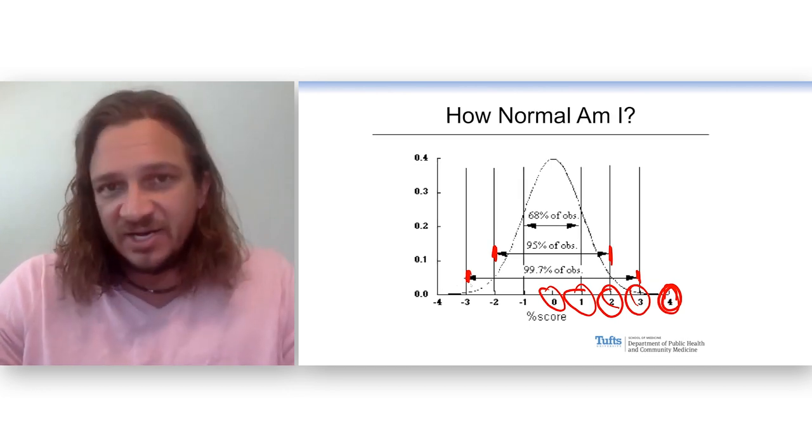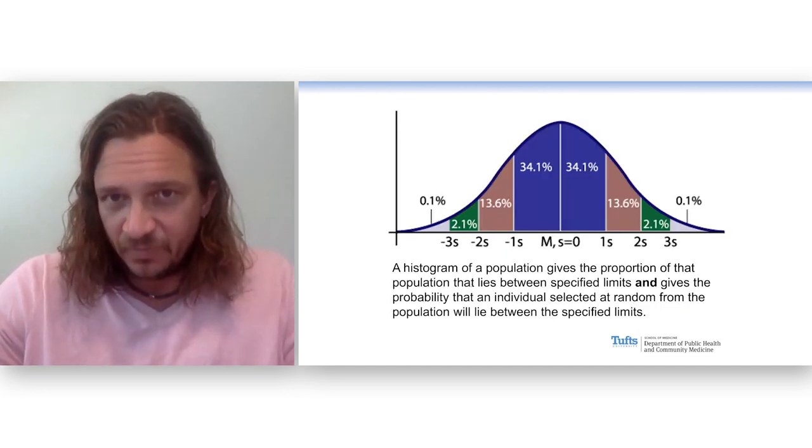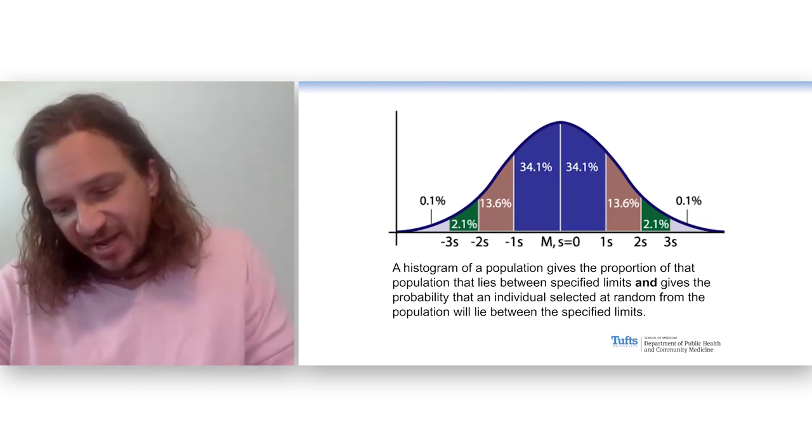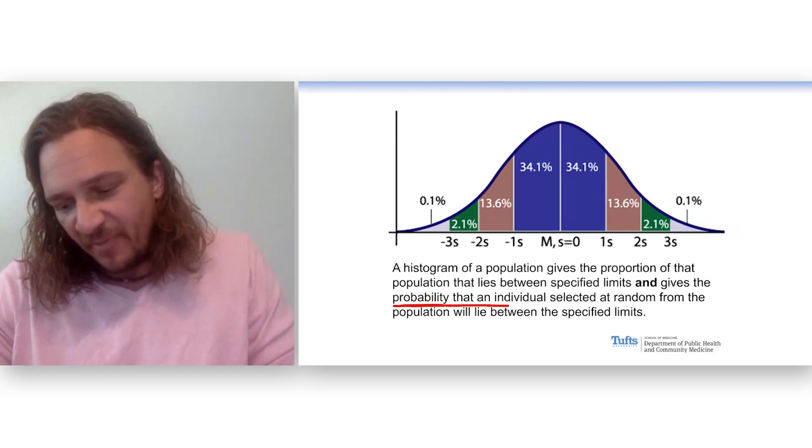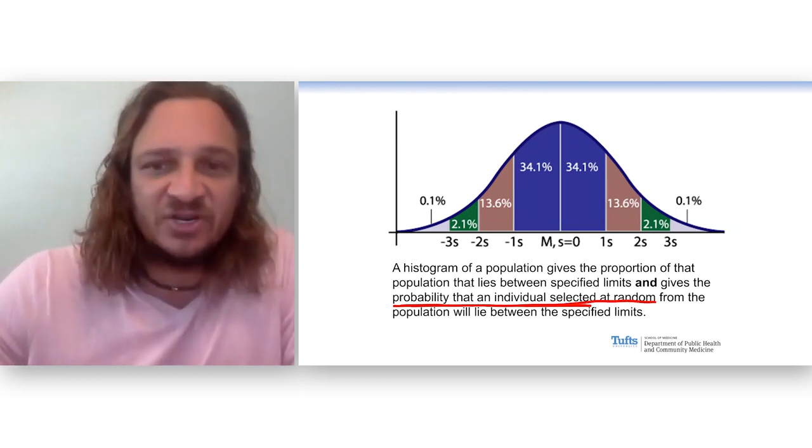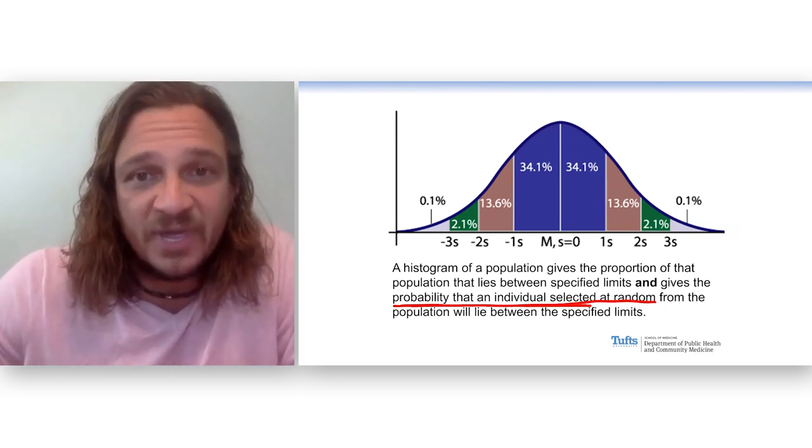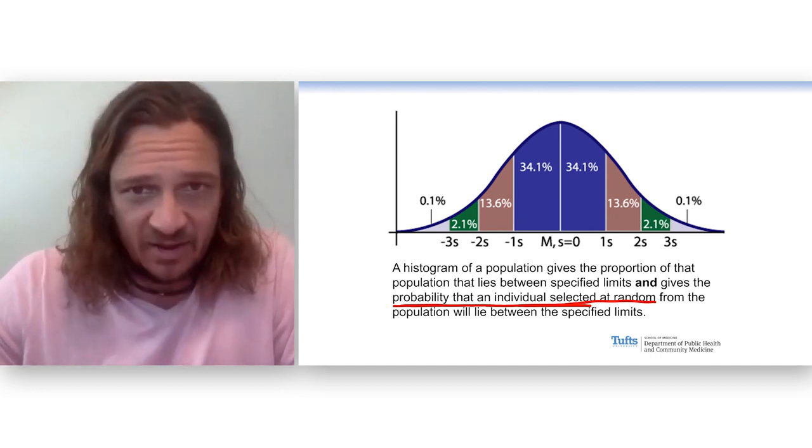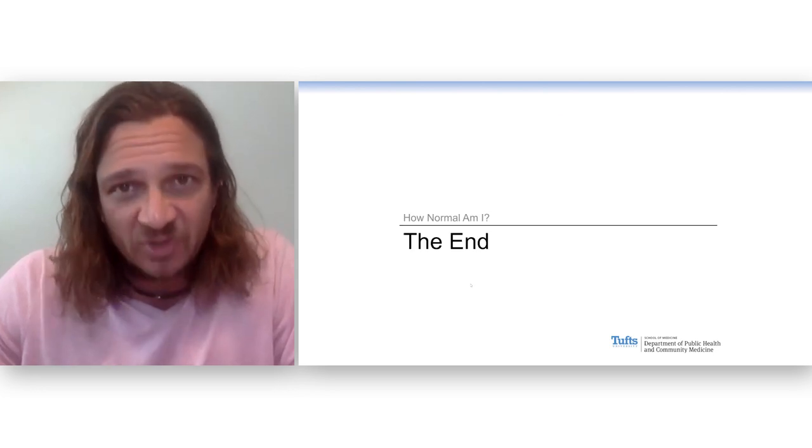So when we're given a distribution and it's normal with the mean and the standard deviation, now we can think about what's the probability that an individual selected at random will be between these limits. And we can use this for anything that we think is distributed with this Gaussian or this normal shape.